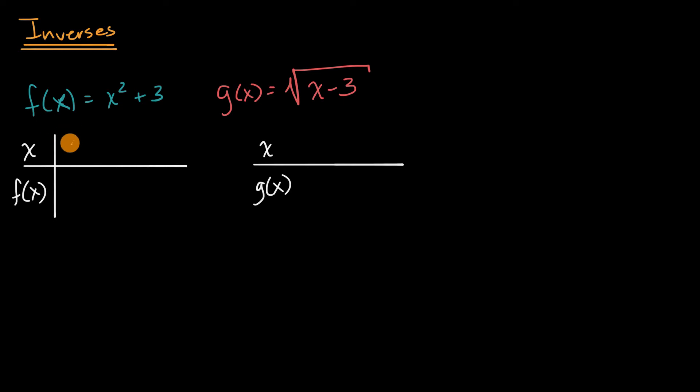Now, first let's try a simple value. If we try out the value one, what is f of one? Well, it's going to be one squared plus three. That's one plus three, that is four. So if g is an inverse of f, then if I input four here, I should get one.